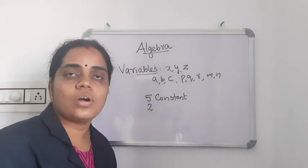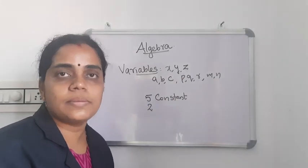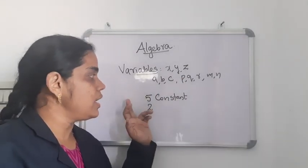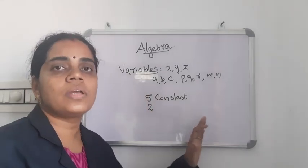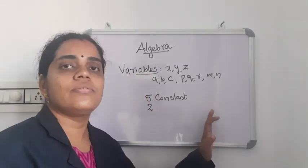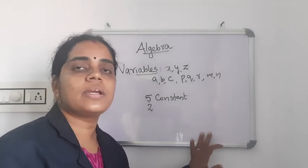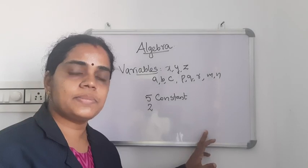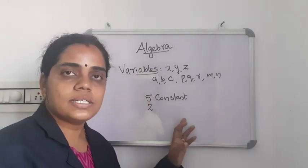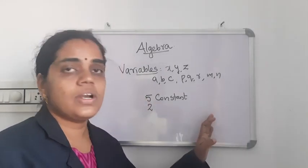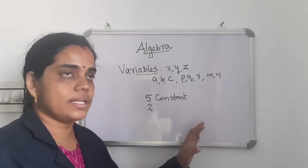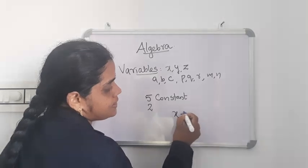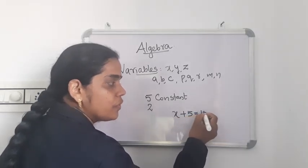For operations, all of you are familiar: addition, subtraction, multiplication and division. So variable, constant, and any one of the four operations together we can form an algebraic expression. What is an algebraic expression? Variables, constants and any one of the four operations. For example, we can take X plus 5 equal to 15.